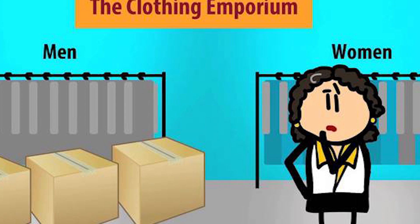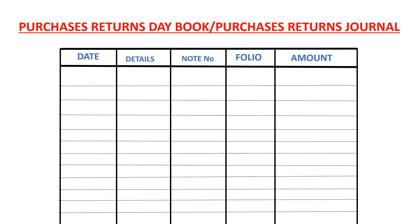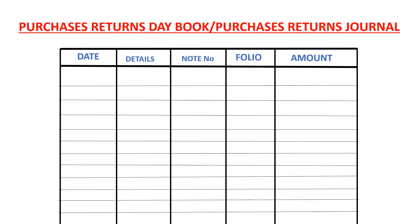When returns outwards happen, there is a special journal where we record them. This special journal is called the purchase returns journal, the purchase returns day book, the returns outwards day book, or the returns outwards journal. In today's session we are going to look at how we post items in the returns outwards journal, and I'll also show you the double entry relating to purchases returns.